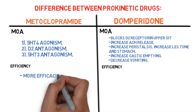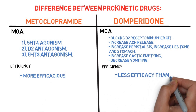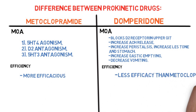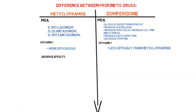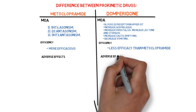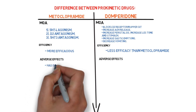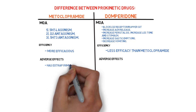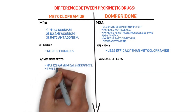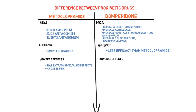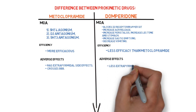Regarding efficacy: metoclopramide is more efficacious whereas domperidone is less efficacious. Regarding adverse effects: metoclopramide has significant extrapyramidal side effects and crosses the blood-brain barrier, whereas domperidone has fewer extrapyramidal side effects and does not cross the blood-brain barrier.